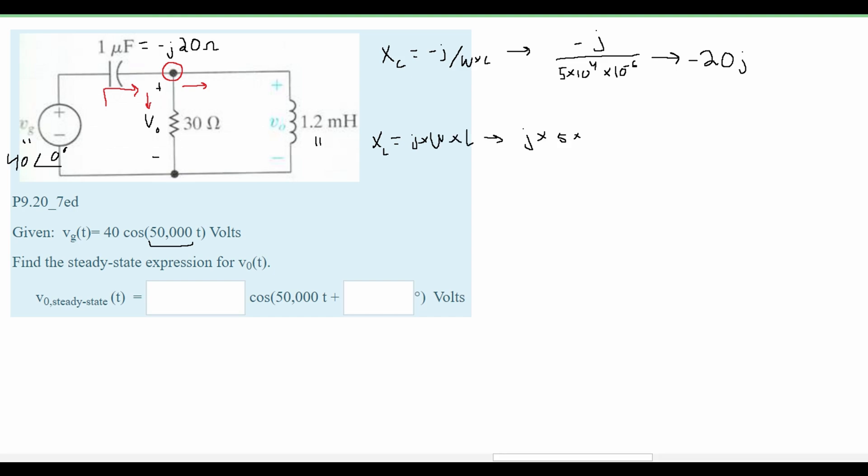From this we're going to get j times 5 times 10 to the 4th again because this is our omega multiplied by 1.2, and then we need to convert millis to just henry so we're going to multiply this by 10 to the negative 3rd. This is going to give us the value of j times 60.